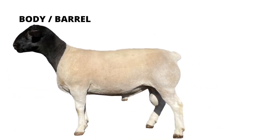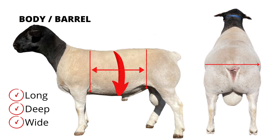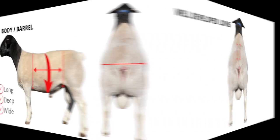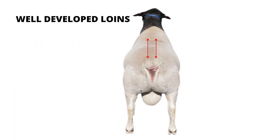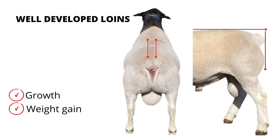Now we are going to the body or the barrel. We want it long, deep and wide. All three are directly correlated to growth and weight gains, which means more money in your pocket. And we want very well developed loins. Well developed loins are directly correlated to growth and weight gains also. We are looking for a nice square top line, and the shape and the depth of the loins is important. So when possible, see if there is eye muscle depth scanning data available.